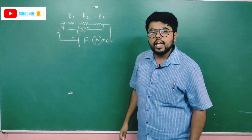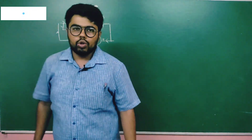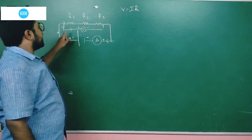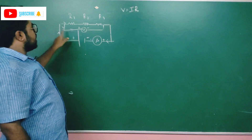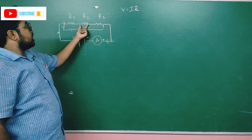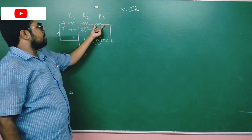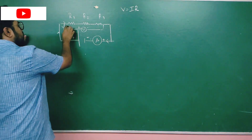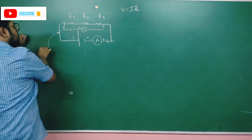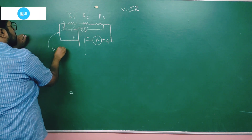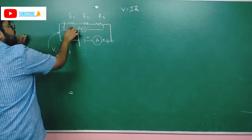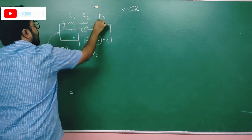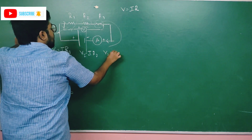This is a series connection. In series connection, how do you apply Ohm's law? V is equal to IR. In a series connection, the current remains the same throughout, but the voltage is different across each component. The current will not deviate; V equals IR applies to each element.